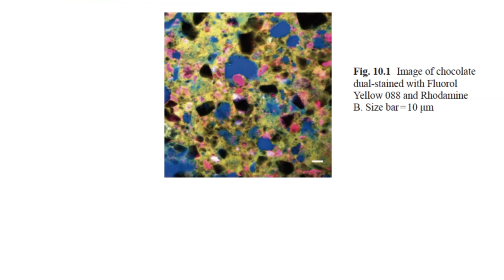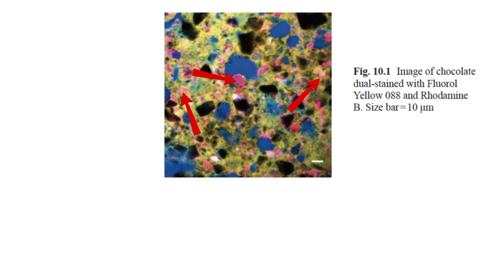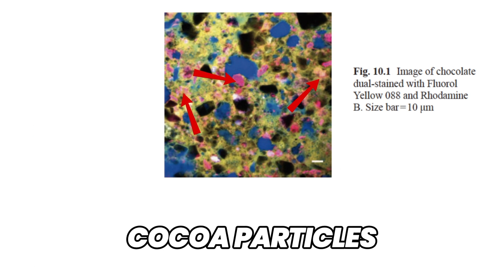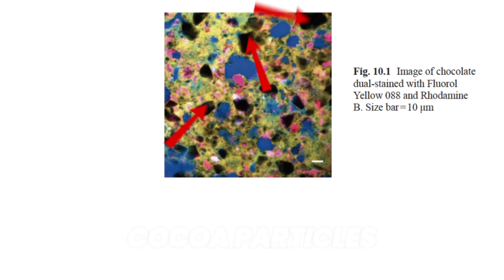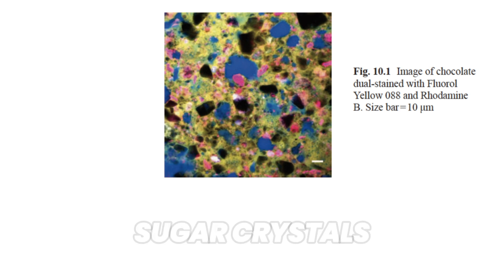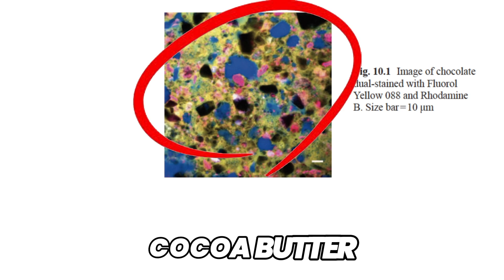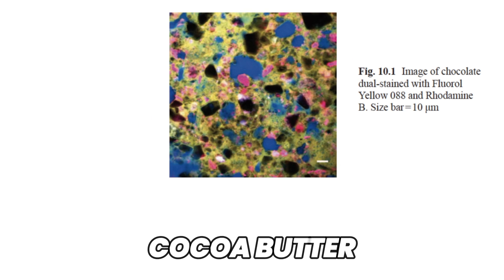What are we seeing in this micrograph? What's blue? That is the milk proteins. Red is the cocoa particles. And black is any sugar crystals. And then you can see they're all held within this yellow phase — and that's the fatty phase. That's the cocoa butter.